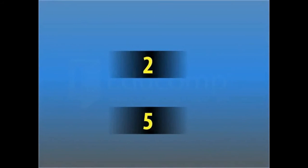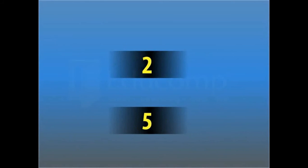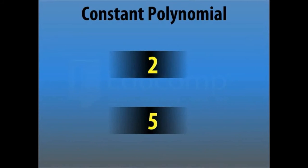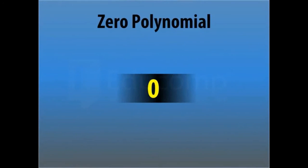A polynomial in which a variable is not present, or the power of the variable is 0, is a constant polynomial. For example, 2 is a constant polynomial, and similarly 5 is a constant polynomial. The constant polynomial 0 is called the zero polynomial.